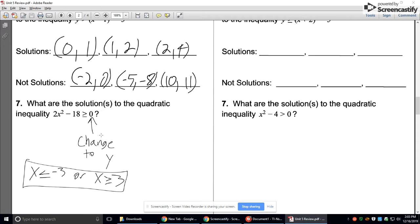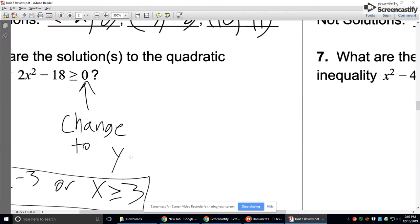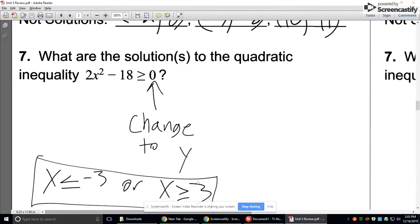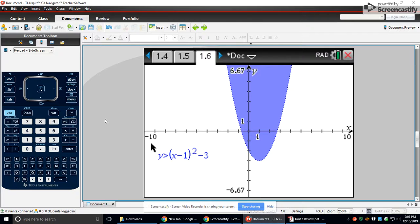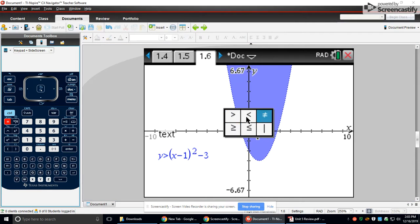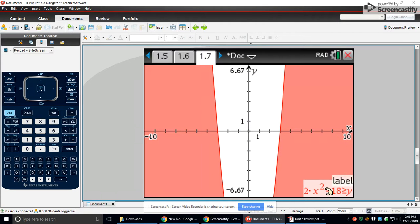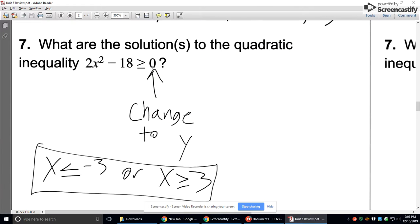All right. So number 7, if you want to do number 7 all on the graphing calculator, what are the solutions to this quadratic inequality? Change the 0 to a y, and then you can graph it. So you can do it as a relation. And then I showed you, control equals pulls up the inequality signs. So what I did was I typed it in, 2x squared minus 18 is greater than or equal to y. So replace the 0 with the y.